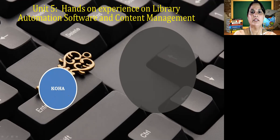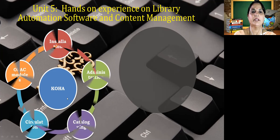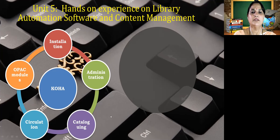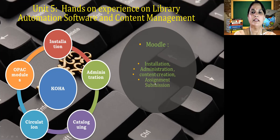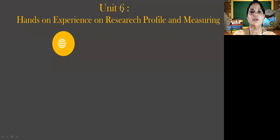Unit 5 will be on hands-on experience on library automation software and content management software. For library automation, we are covering Koha software — how to install it, administrative work, cataloging menus, circulation menus, and OPAC modules. For content management, we are covering Moodle software — how to install it, administrative part, how to create content, and assignment and submission in Moodle.